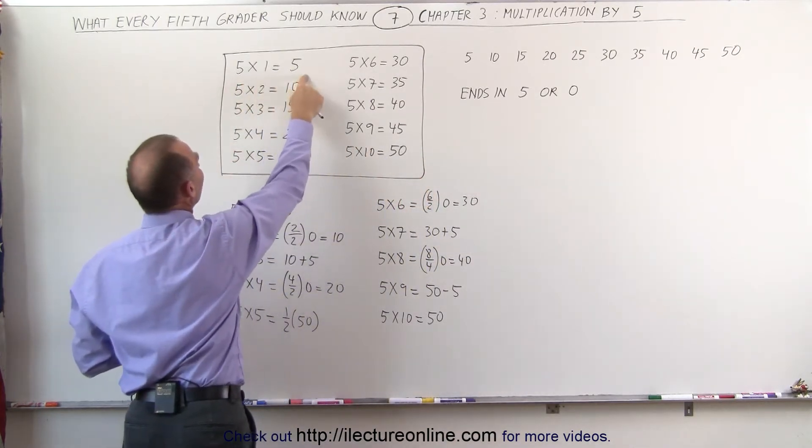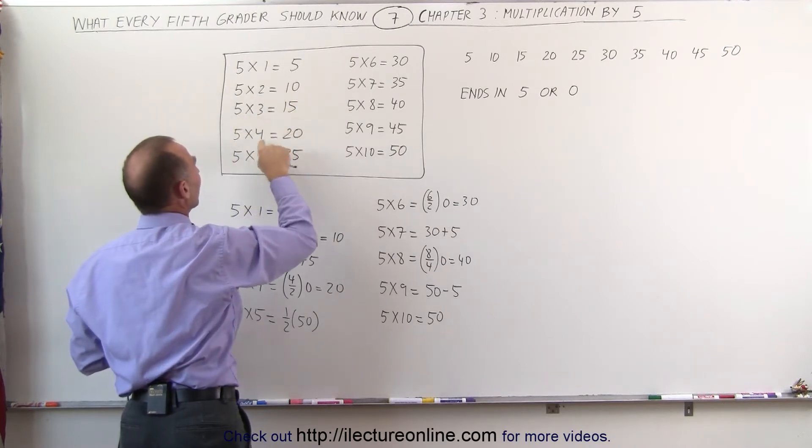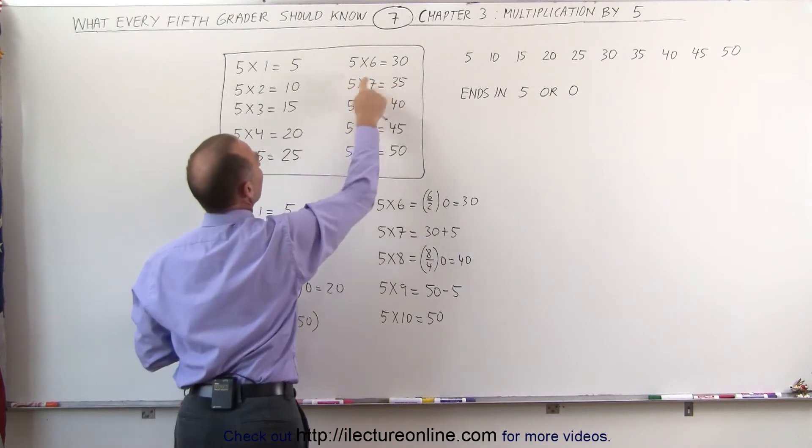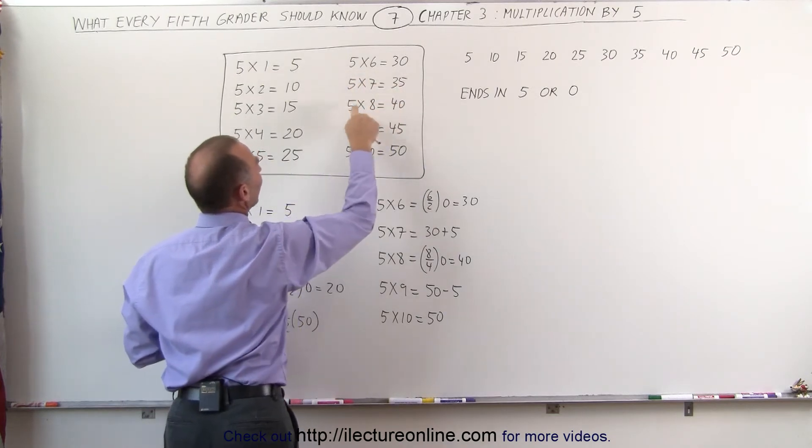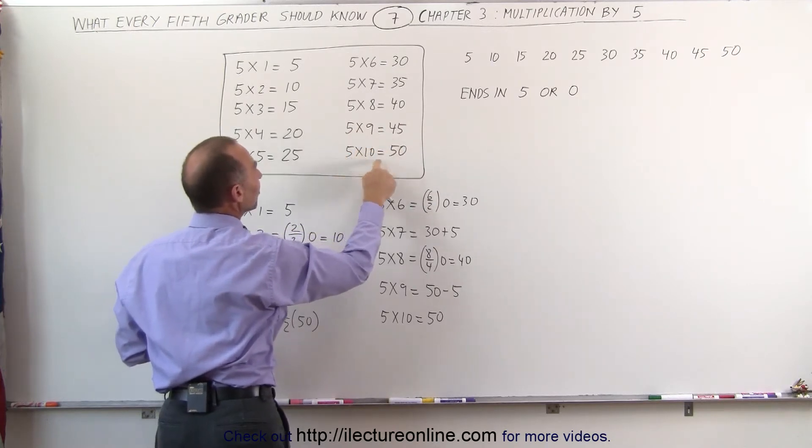So 5 times 1 is 5, 5 times 2 is 10, 5 times 3 is 15, 5 times 4 is 20, 5 times 5 is 25, 5 times 6 is 30, 5 times 7 is 35, 5 times 8 is 40, 5 times 9 is 45, and 5 times 10 is 50.